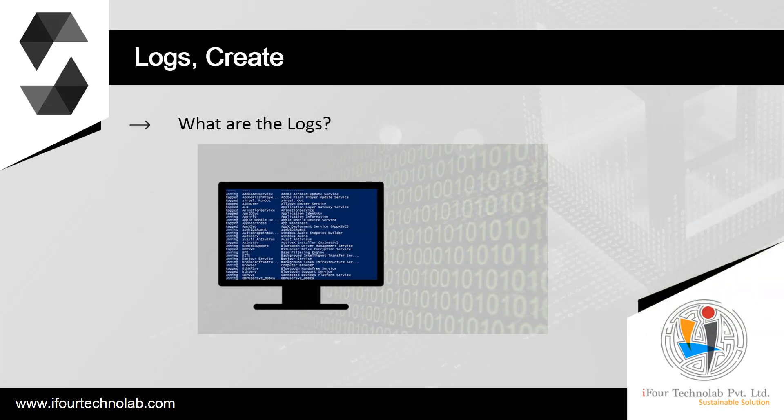What are logs? It is possible to store data in a specially indexed data structure that maps up to the block level. This feature, called logs, is used by Solidity to implement events. Contracts cannot access log data after it has been created, but logs can be efficiently accessed from outside the blockchain. Since some part of the log data is stored in bloom filters, it is possible to search for this data in an efficient and cryptographically secure way, so network peers that do not download the whole blockchain — so-called light clients — can still find these logs.